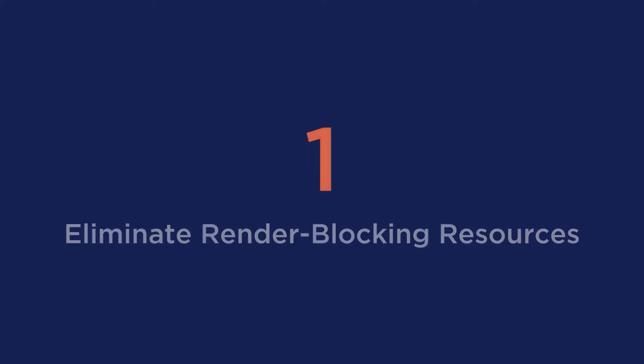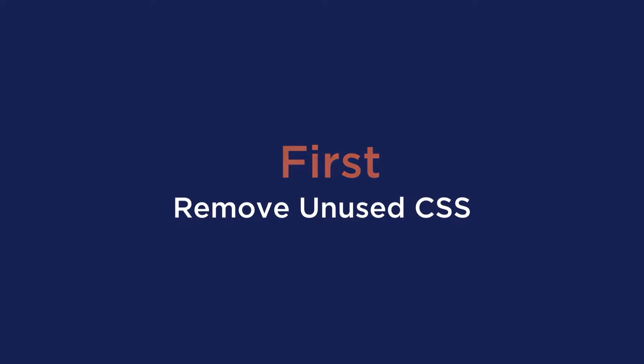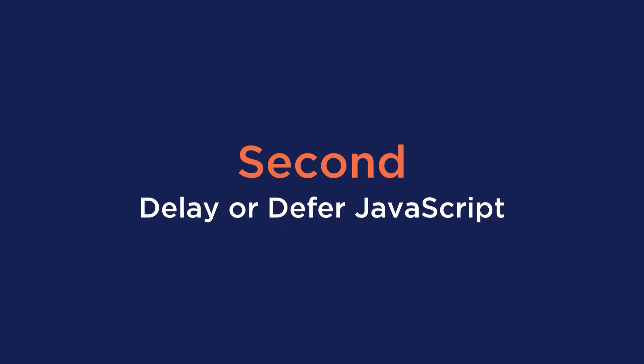Now let's get into the four main strategies that will help avoid chaining critical requests on WordPress. Number one is to eliminate render blocking resources. A render blocking resource triggers pieces of code that prevent a webpage from loading quickly. When it comes to eliminating render blocking resources, there are two efficient methods: the first is to remove unused CSS, and the second is to delay or defer JavaScript. Removing unused CSS will get rid of unused code and remove bloating.